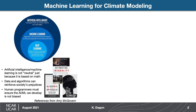First, by defining some of the terms you might hear interchangeably. The figure in the top left outlines these different terms, starting with artificial intelligence — a broad term referring to programs that can sense, reason, act, and adapt. Machine learning is a subset of that, referring to algorithms whose performance improves as they are exposed to more data over time. Deep learning is a further subset, referring to specific architectures like multi-layered neural networks.